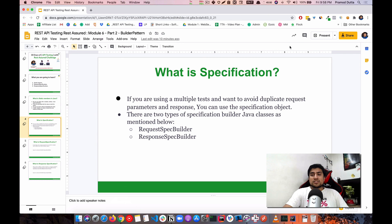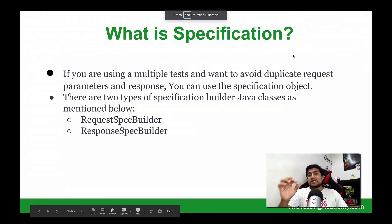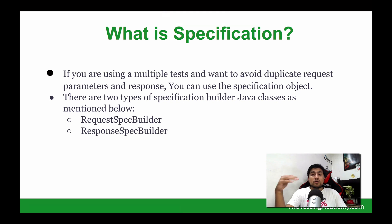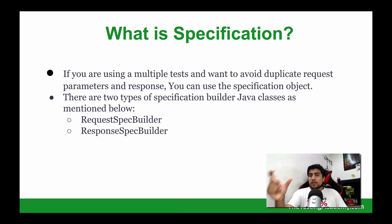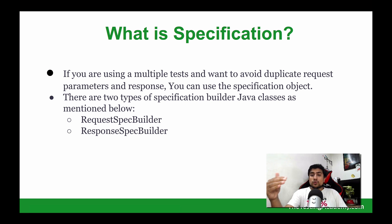Let's move on to another important topic: specification. If you are using multiple tests and want to avoid duplication — for example, when the base URL, query parameter, or endpoint is the same — you can create a specification object and use the same object every time you make a different request. There are two important specifications available in REST Assured: the request spec builder and the response spec builder.